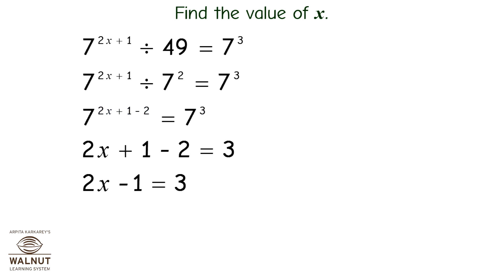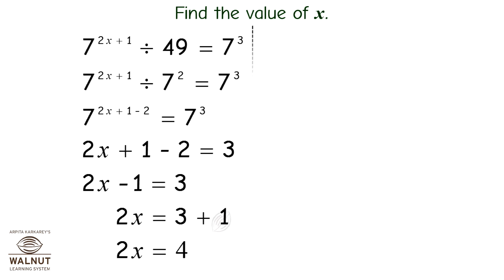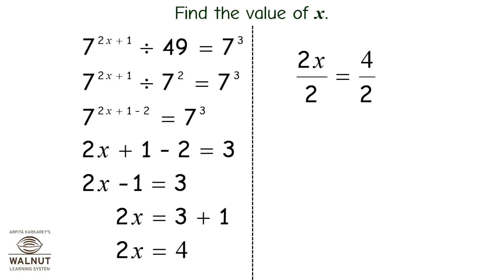Therefore, 2x minus 1 is equal to 3. So 2x is equal to 3 plus 1, so 2x is equal to 4. By dividing both sides by 2, we get x is equal to 2.